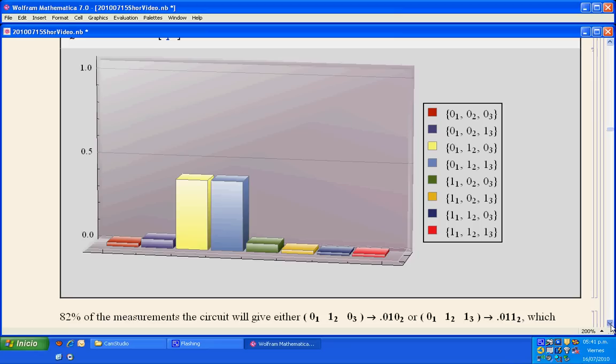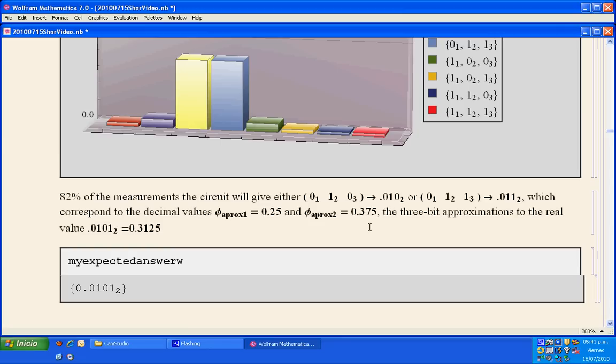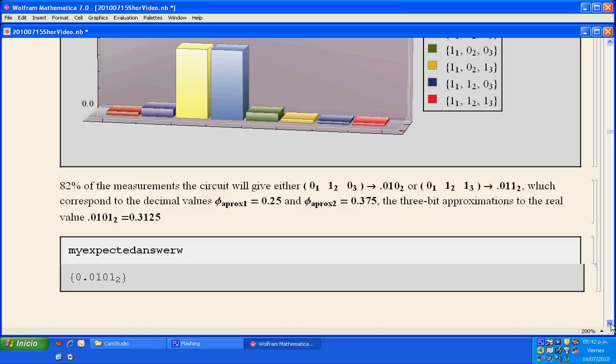Those are 010 and 011, and those are good approximations if we interpret them as binary fractions. 0.010 and 011 are good approximations to 0.0101, the expected answer actually. So we have 82% of the times we have a good approximation to the phase.